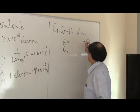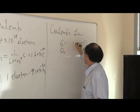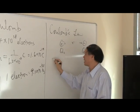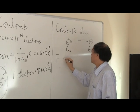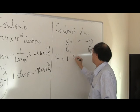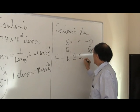And these two charges are separated by a distance of R. Coulomb's law states that the force acting between the two charged masses is equal to K times Q1, Q2 divided by R squared.